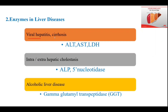In viral hepatitis or cirrhosis, we see an increase in ALT, AST, and lactate dehydrogenase. In intra- or extrahepatic cholestasis, we see a rise in alkaline phosphatase and 5-nucleotidase. In alcoholic liver disease, the most specific marker is gamma-glutamyl transferase, or gamma-glutamyl transpeptidase.